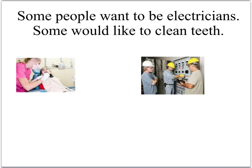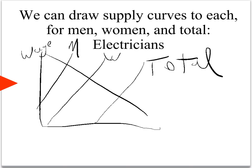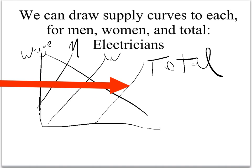Some people want to be electricians, some like to clean teeth. Some men like to be electricians, some men might like to clean teeth. Some women like to be electricians, some women might like to clean teeth. At any wage, there are probably people from both genders who would choose either occupation. So we can draw supply curves for each — for men or for women. At any wage, we have men and women who want to be electricians. The total number of men and women who want to be electricians is the men plus the women at any wage.